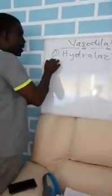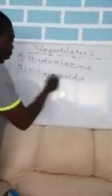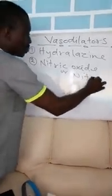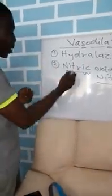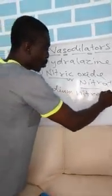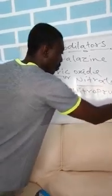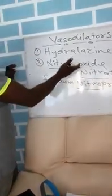Another vasodilator is nitric oxide or nitrate. Anywhere you see 'nitrate' in a drug name, it is an indicator of a vasodilator. For your exam, you should just look for the word 'nitrate' — immediately you see it, it automatically means the drug is a vasodilator. An example is sodium nitroprusside. The key word 'nitrate' tells us it falls under this category and is a vasodilator.